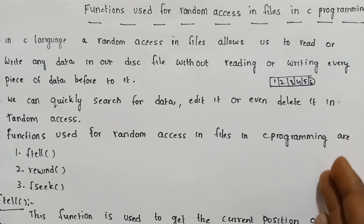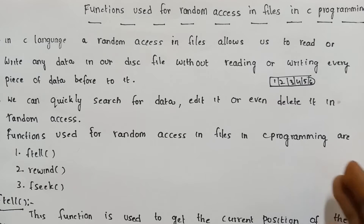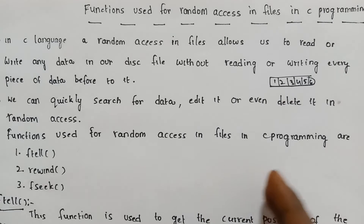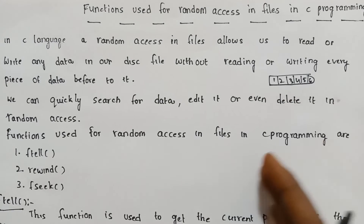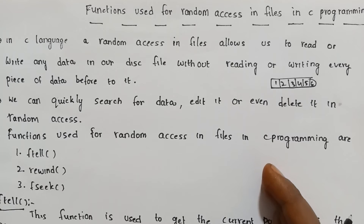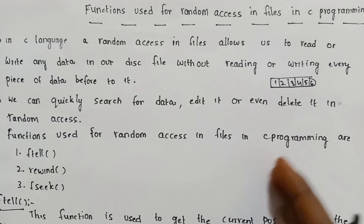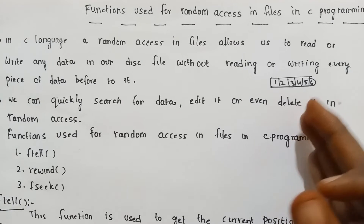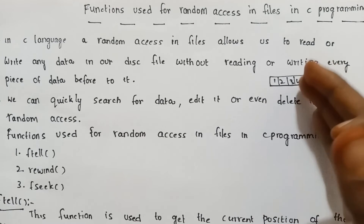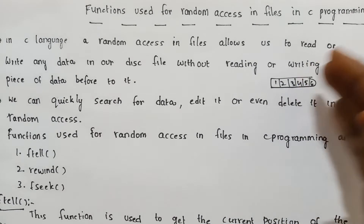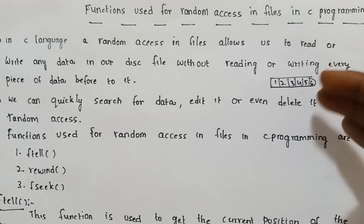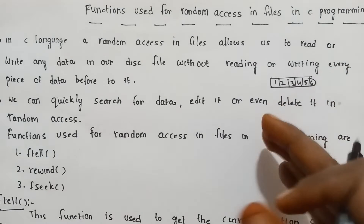If you have random access to your file data, you can also use sequential access. Sequential access starts from the beginning, so you process all elements of the data one after another — each is the next element.